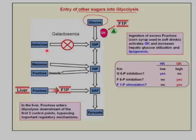First we've got galactose. This picture has a big X — I'll explain that in a second — but galactose, when it's absorbed, goes through a couple of processes which will eventually bring it to glucose-6-phosphate so that it can be used in glycolysis. The reason the X is here is because in galactosemia, one of the two enzymes involved in converting galactose into glucose-6-phosphate is deficient, and you get a buildup of galactose in the blood.